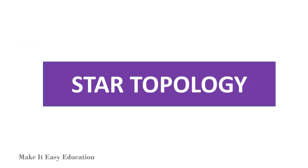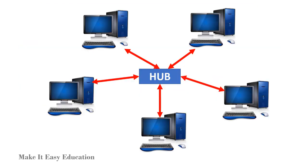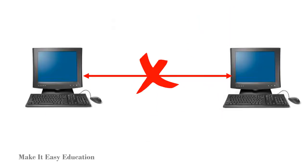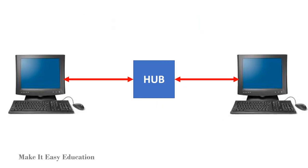Star topology. In star topology, each device in the network is connected to a central device called a hub. The devices can't communicate directly; they can communicate with other devices through the hub.